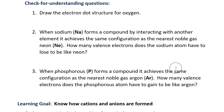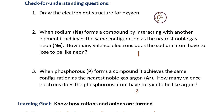Here are some check for understanding questions. The electron dot structure for oxygen has a capital O in the middle and six dots around the letter O. There are six dots because oxygen is in group 6A.